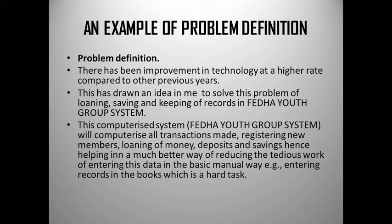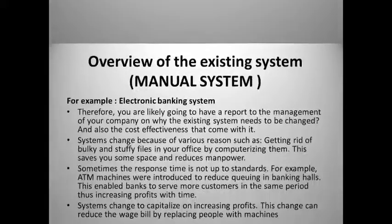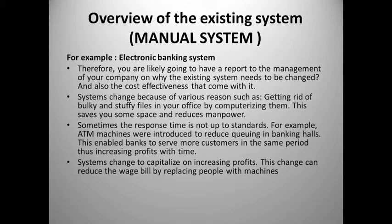This computerized system — the Feather Youth Group system — will computerize all transactions made: registering new members, running of money, deposit and saving, hence helping in a much better way by reducing the tedious work of entering data manually. Basically, the problem is that these processes consume a lot of time — member registration, running money, and saving deposits — and therefore your system will come to solve that.